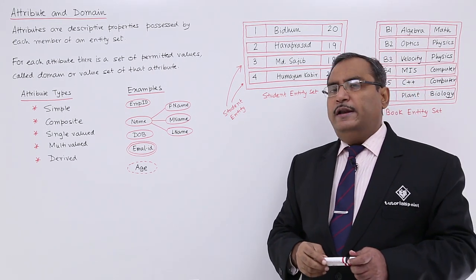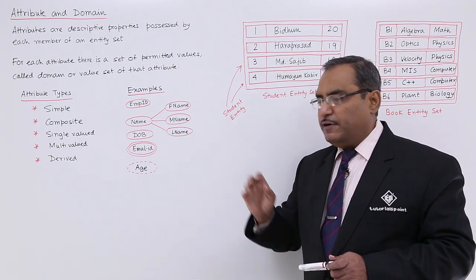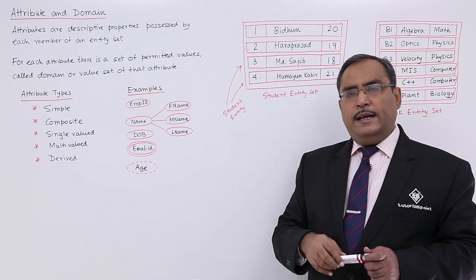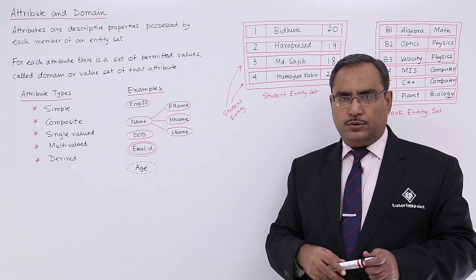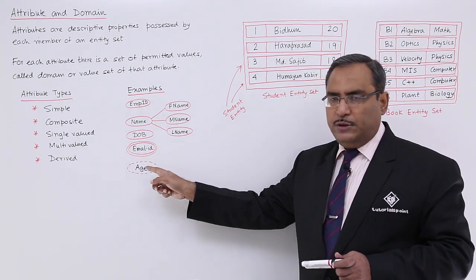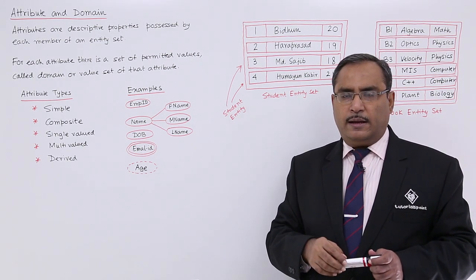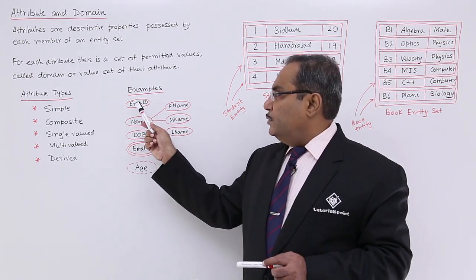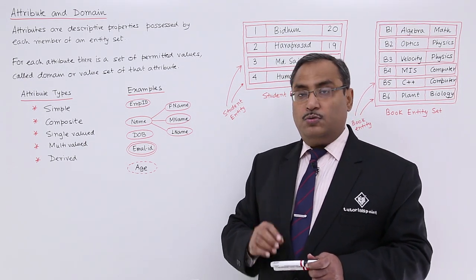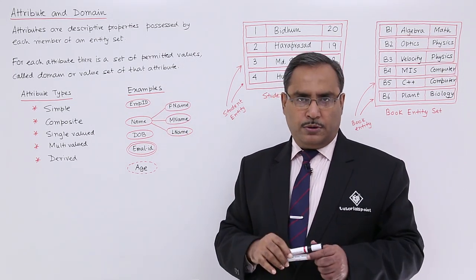Now, how many different types of attributes are there? Attributes can mainly be categorized into five different categories. The first category is the simple attribute. In our ER diagram, which will be covered in the next videos, we represent attributes within an ellipse. Here, EMPID is an example of a simple attribute because EMPID cannot be divided further — that is a simple attribute.